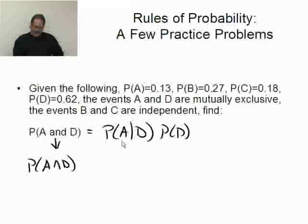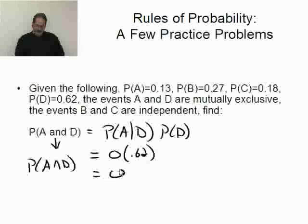Well, let's see. A given D. They're mutually exclusive. So, if they're mutually exclusive, what's the probability of A given D happened? That's 0. Times what's the probability of D? Times 0.62. That is simply 0. A and D can't happen. They're mutually exclusive. They don't overlap anywhere. The definition of mutually exclusive.